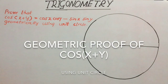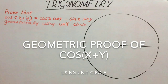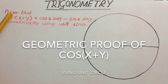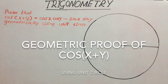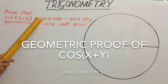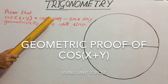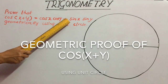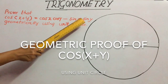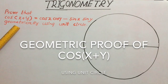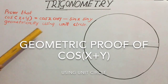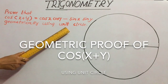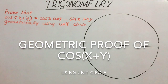Hello everyone, today let us consider one geometric proof. That is, prove that cos(x + y) = cos x cos y − sin x sin y geometrically, using the unit circle concept.